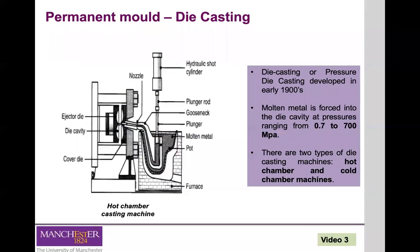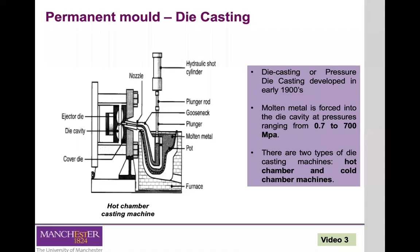The die casting process was initially developed around the 1900s. The European term for this process is normally 'pressure die casting.' In the die casting process, the molten metal is forced into the cavity of the mold at pressures that normally range from 0.7 to 700 MPa. There are two types of die casting machines: the hot chamber and the cold chamber.